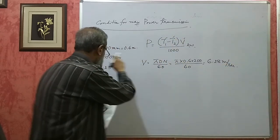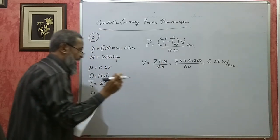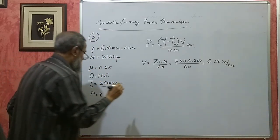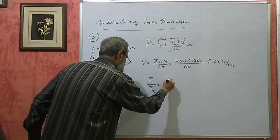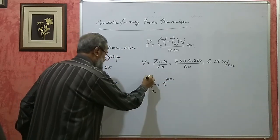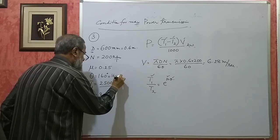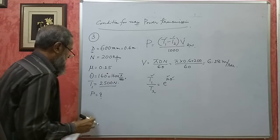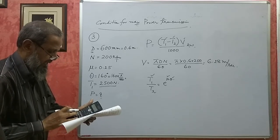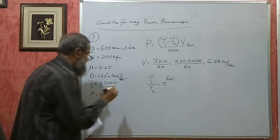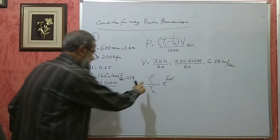Now I need T2. Using the tension ratio formula: T1/T2 = e^(μθ). μ is given as 0.25, and θ must be converted from degrees to radians: 160 × π/180 = 2.79 radians.